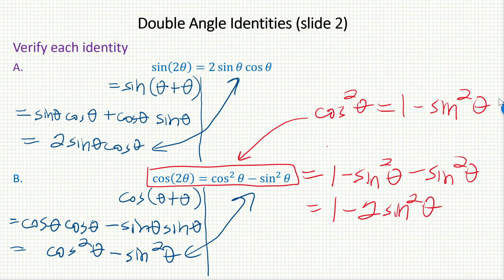That's another version of the double angle identity for cosine. You can get the final one by replacing sine squared theta here with one minus cosine squared theta. And you'd get that third version.